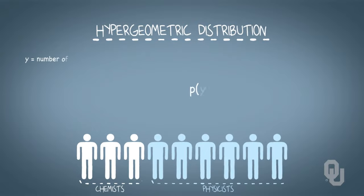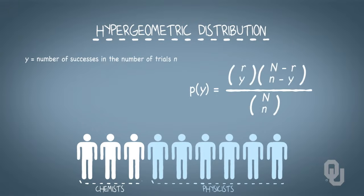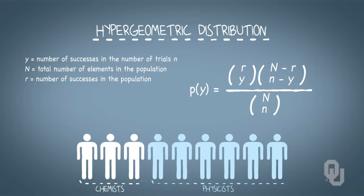Let's generally define the random variable Y as the number of successes in a number of trials N. Capital N is the population size. We're picking a number little n out of this population. We know that the population is made up of two categories. R of the capital N are successes, therefore the remaining capital N minus R are failures.